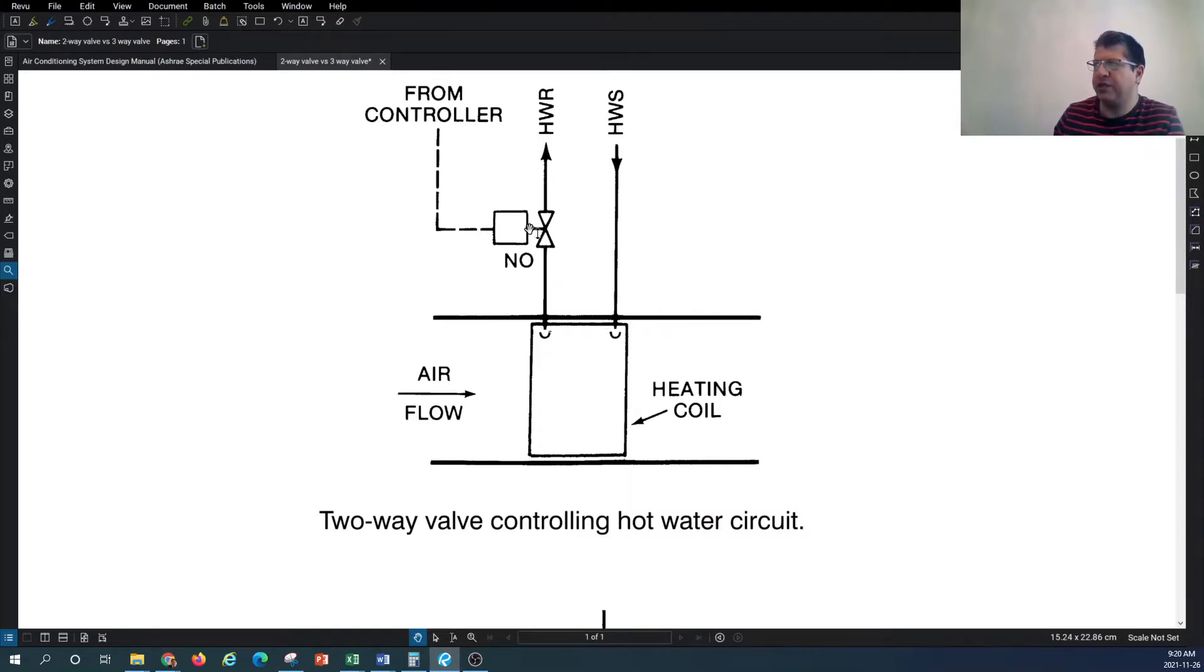The symbol here shows a two-way valve. When we say two-way, it means the hot water has only two ways to pass through. These valves are often controlled whether by pneumatic or digital control systems. Most of the time this is controlled automatically, and you can assume this can also be connected to a thermostat.